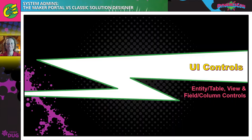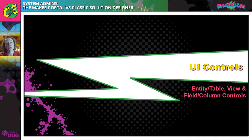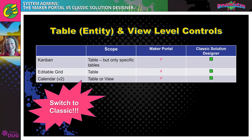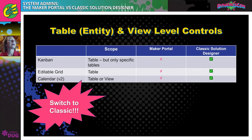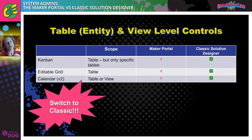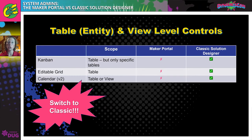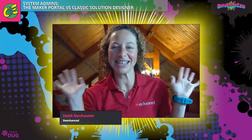User interface controls are applied at the entity or table level, the view level, or the field or column level. At the table and view level, there are three really cool controls: Kanban control, editable grid, and calendar version two. Kanban is table only and only on specific tables. Editable grid is only at the table level — once you apply it there, every view under that table gets that control applied. Calendar version two can be done at either the view or the table level. None of them can be applied in the Maker Portal, so switch to classic.